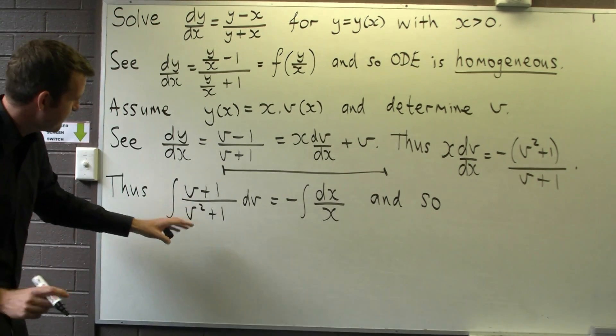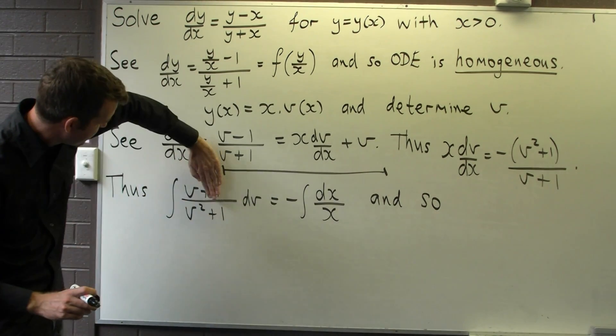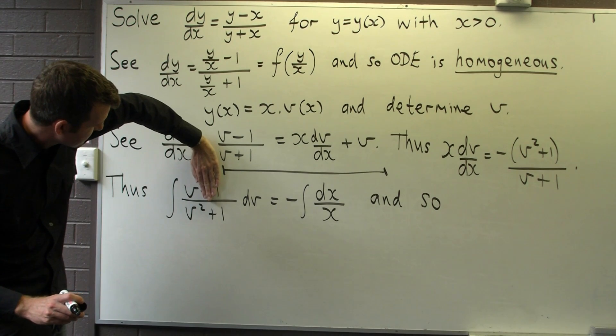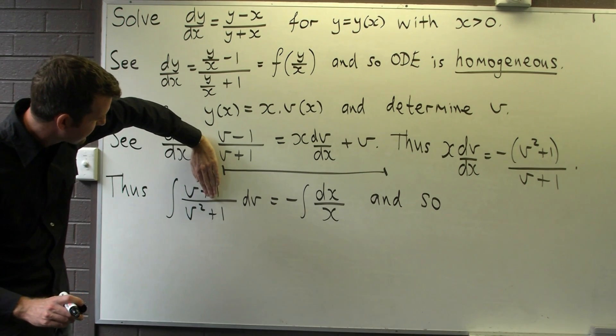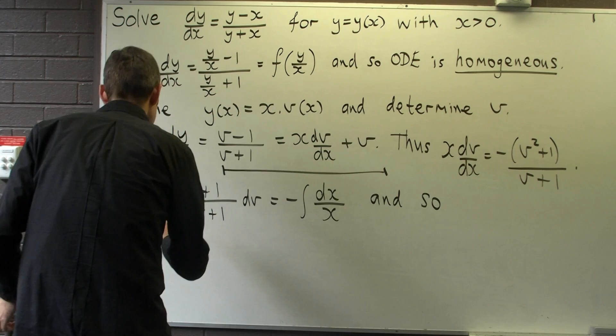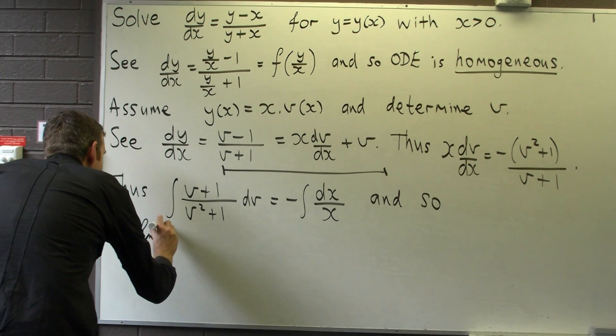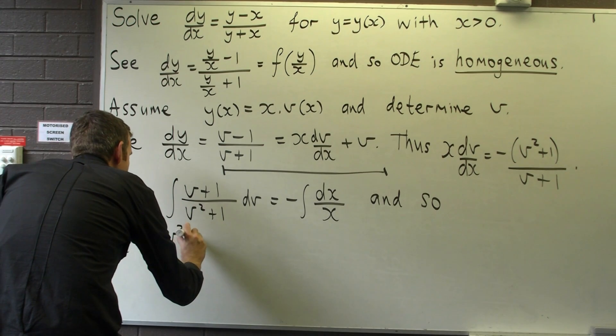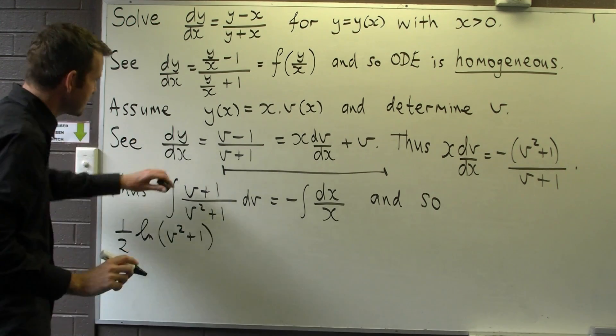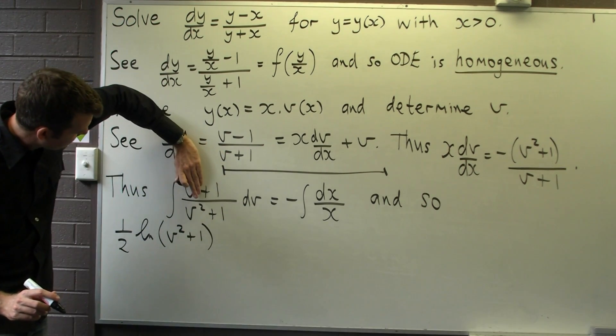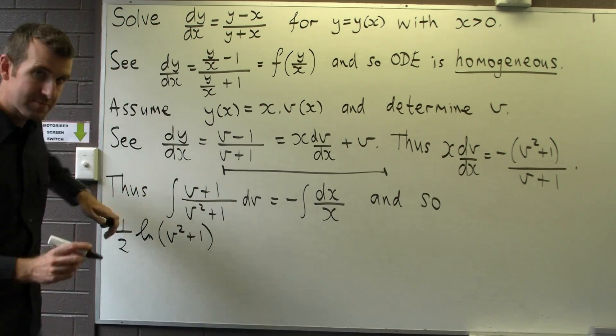Alright, so over here, if I just look at the first term, my integral is going to be a half log, v squared plus one. My second term is going to be integral one on v squared plus one, tan inverse.